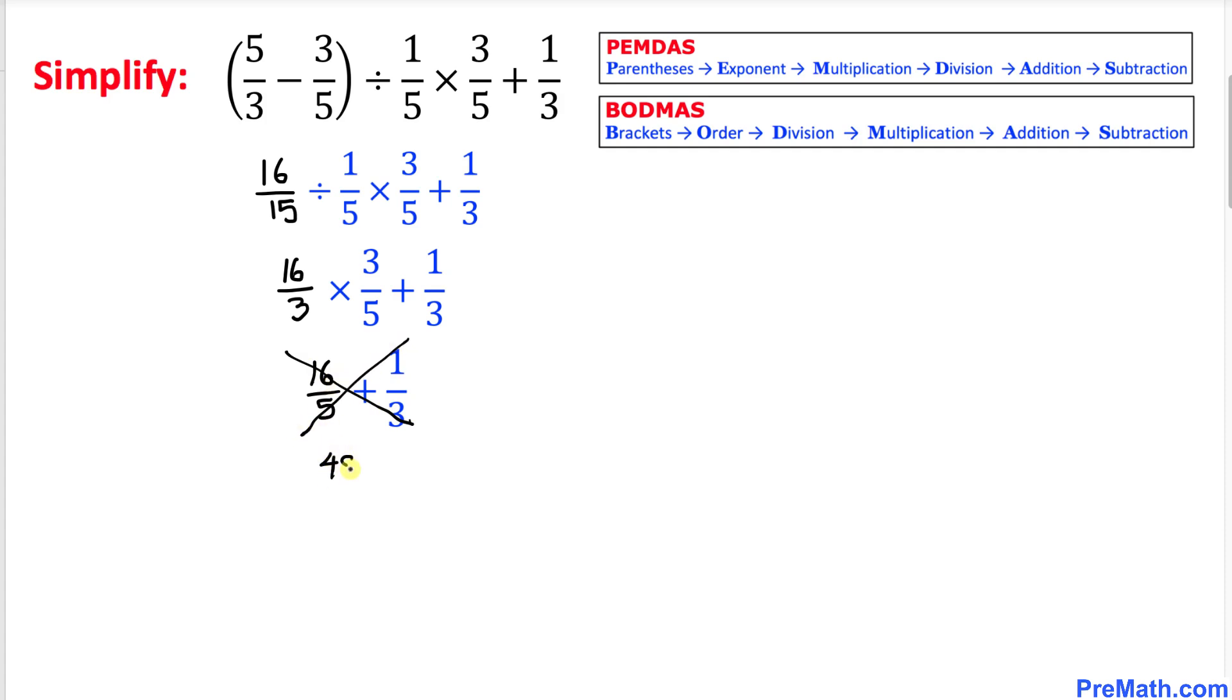16 times 3 is 48, plus 5 times 1 is 5, divided by 3 times 5. We multiply them out—that's going to be 15. So 53 on the top divided by 15, and that is our answer.